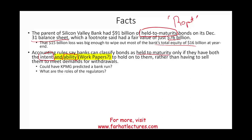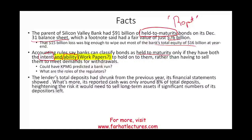I believe this is a question for the regulators — for the bank regulators and the Dodd-Frank Act — not the auditors, not KPMG. The article also mentioned that the lender's total deposits had shrunk from the prior year, and its reported cash was only 8% of total deposits, heightening the risk it would need to sell long-term assets if significant numbers of depositors left.